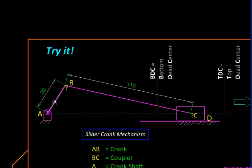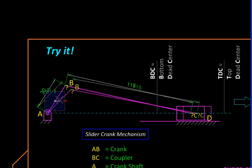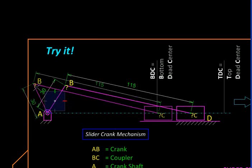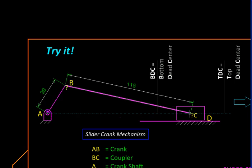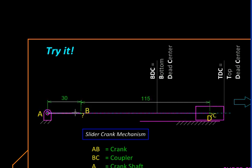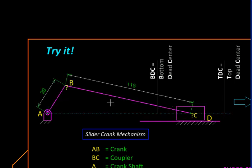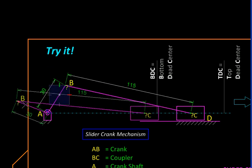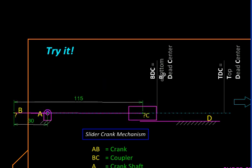In its physical form, it can be represented like this. Link AB shown over here is the crank, which can rotate completely like this. And as it does so, the slider moves back and forth. The link that connects the crank and the slider is called the coupler. The two extreme positions of the slider are called TDC, top dead center, and BDC, the bottom dead center.